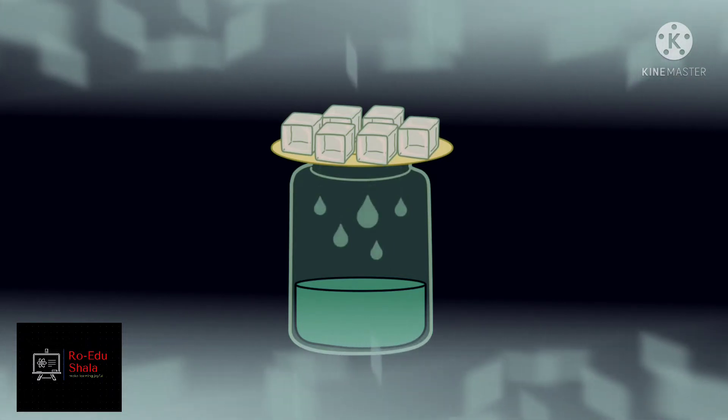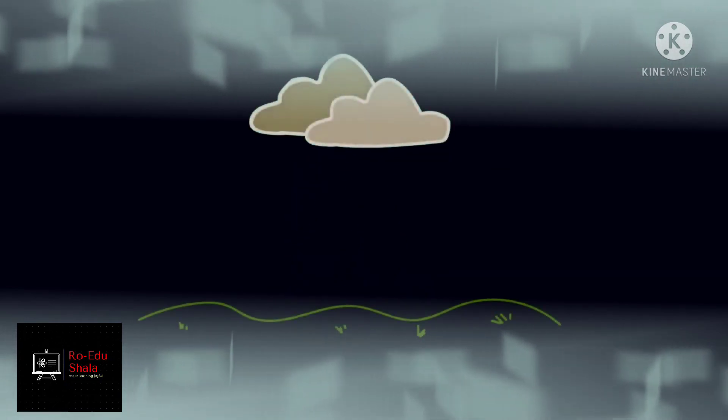Then you can say, this is how rain is made. Water in the air forms clouds, then comes back down as rain drops.